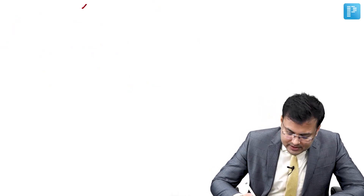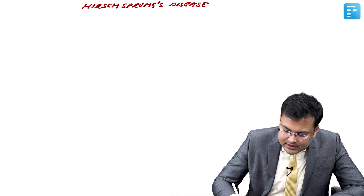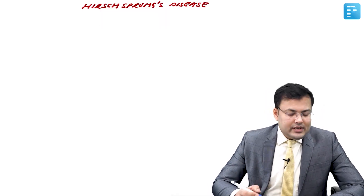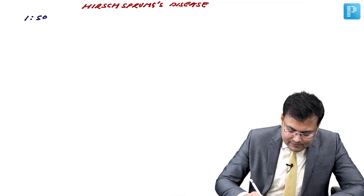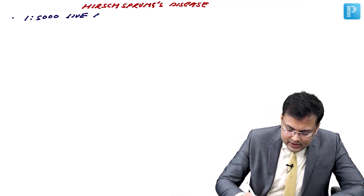Now we are going to discuss Hirschsprung's disease. The incidence of Hirschsprung's disease is 1 in 5000 live births.